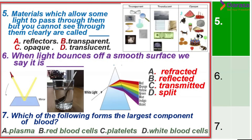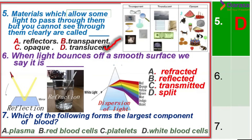Question 5: Materials which allow some light to pass through them but you cannot see through them clearly are called translucent materials — they allow some light through but you cannot see clearly. Question 6: When light bounces off a smooth surface, we say it has been reflected. This is different from refraction and dispersion, which is the splitting of light.